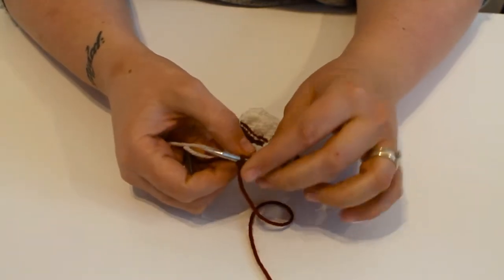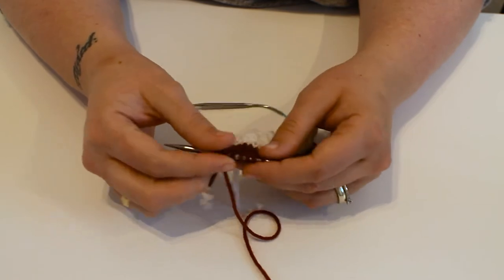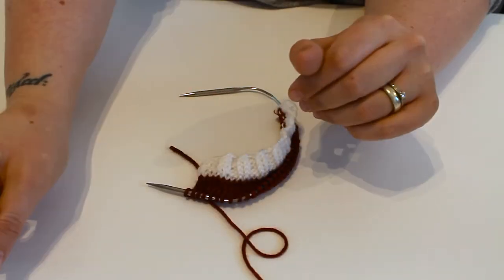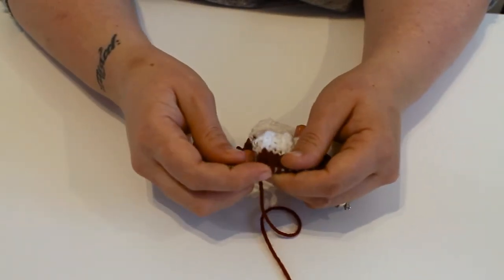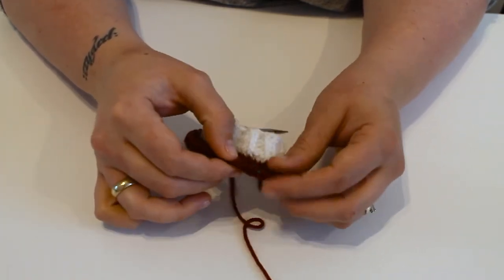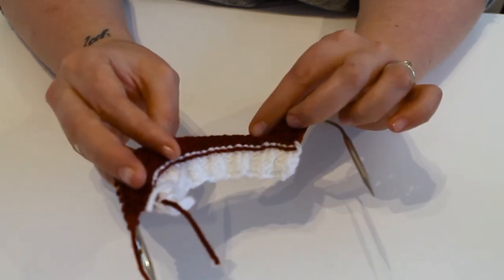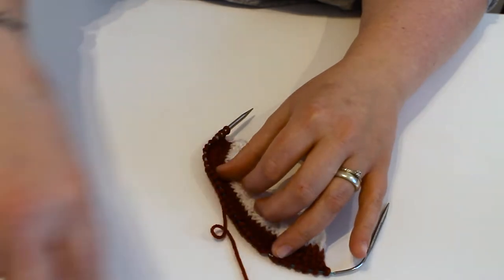Once you have done stocking stitch for six rows, you then start your decrease. Since we're doing the Santa hat, it's going to be long and pointy. You want to knit two together, knit to the end, and then knit the last two stitches together. Then purl on the reverse side and keep doing this and it will eventually create that Santa hat shape.